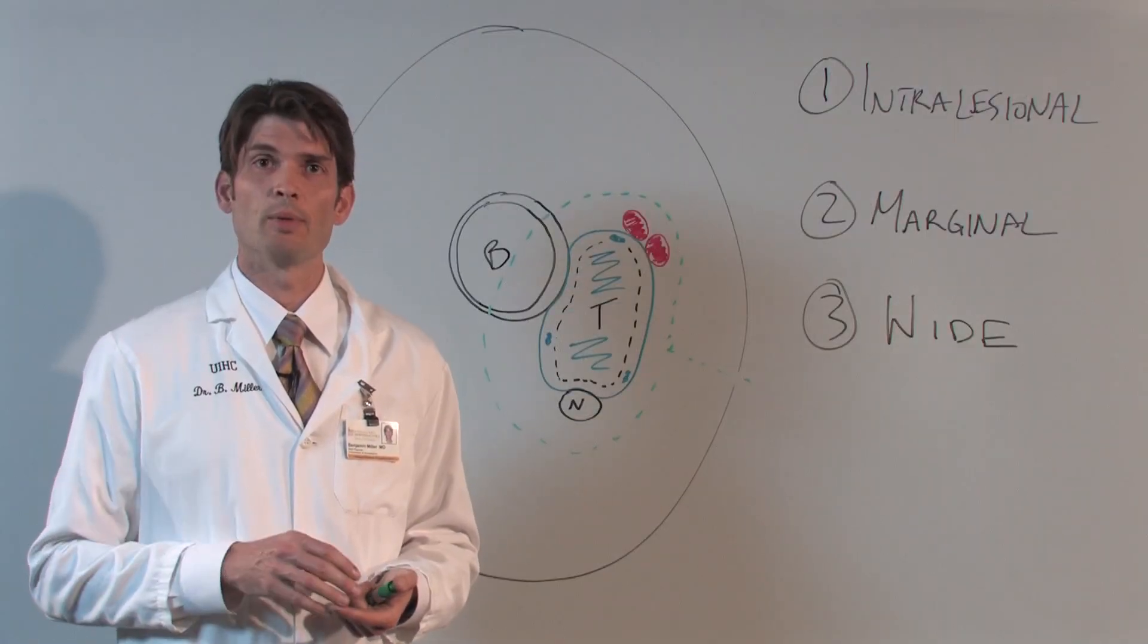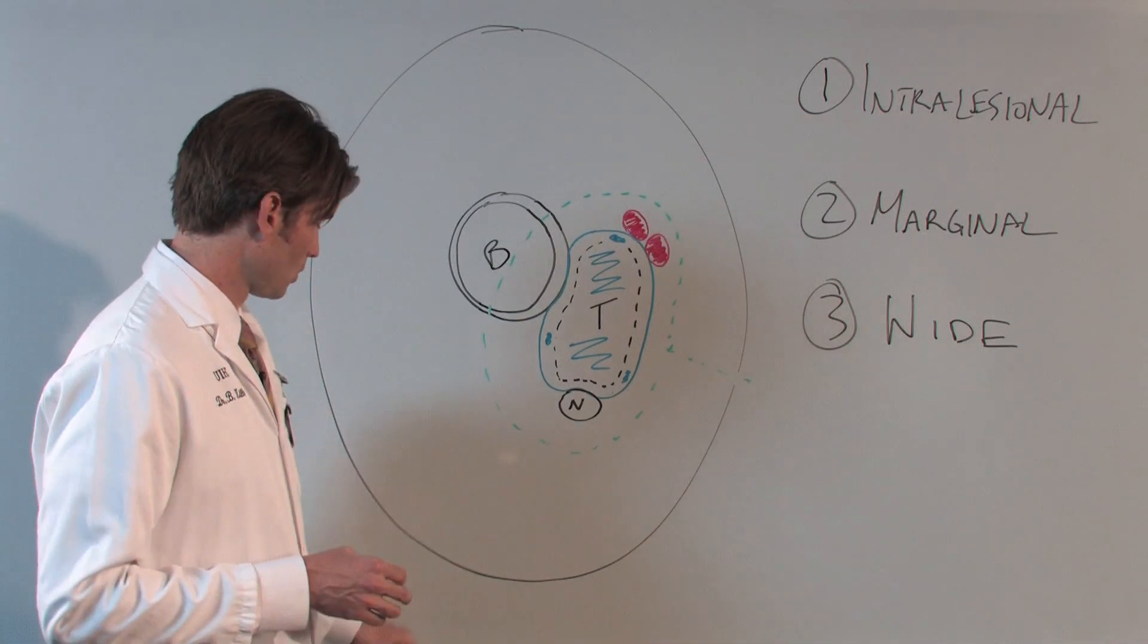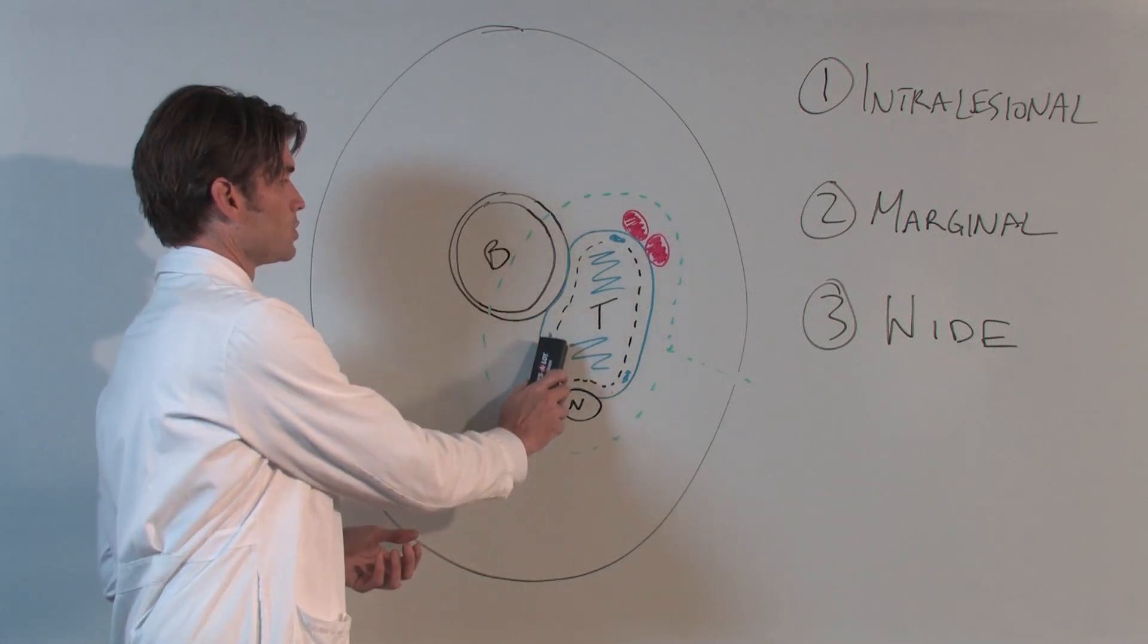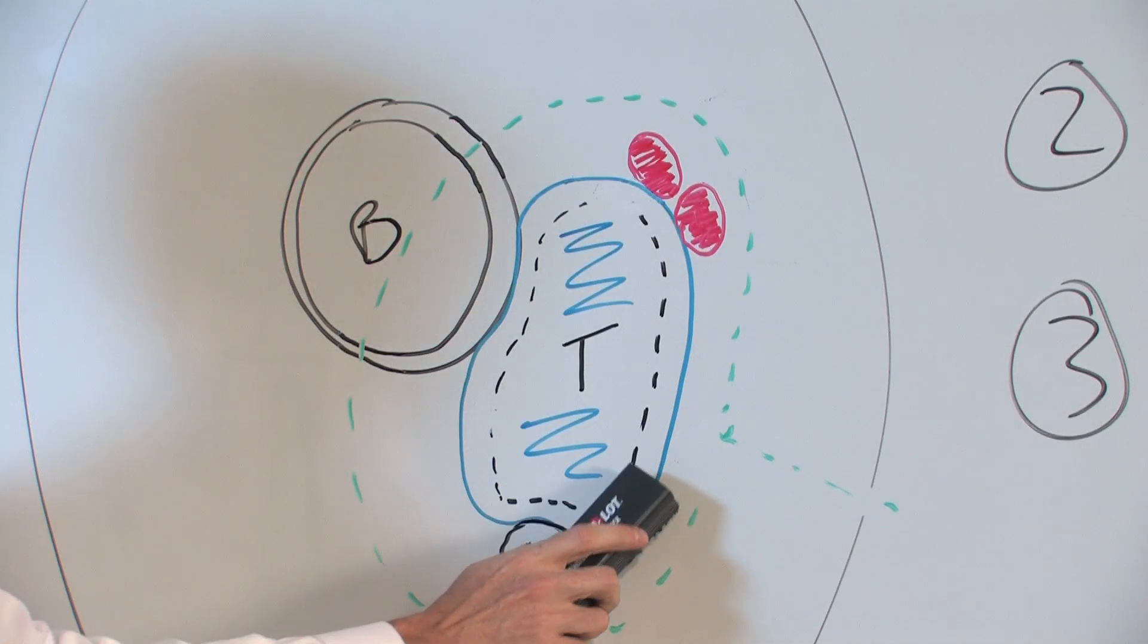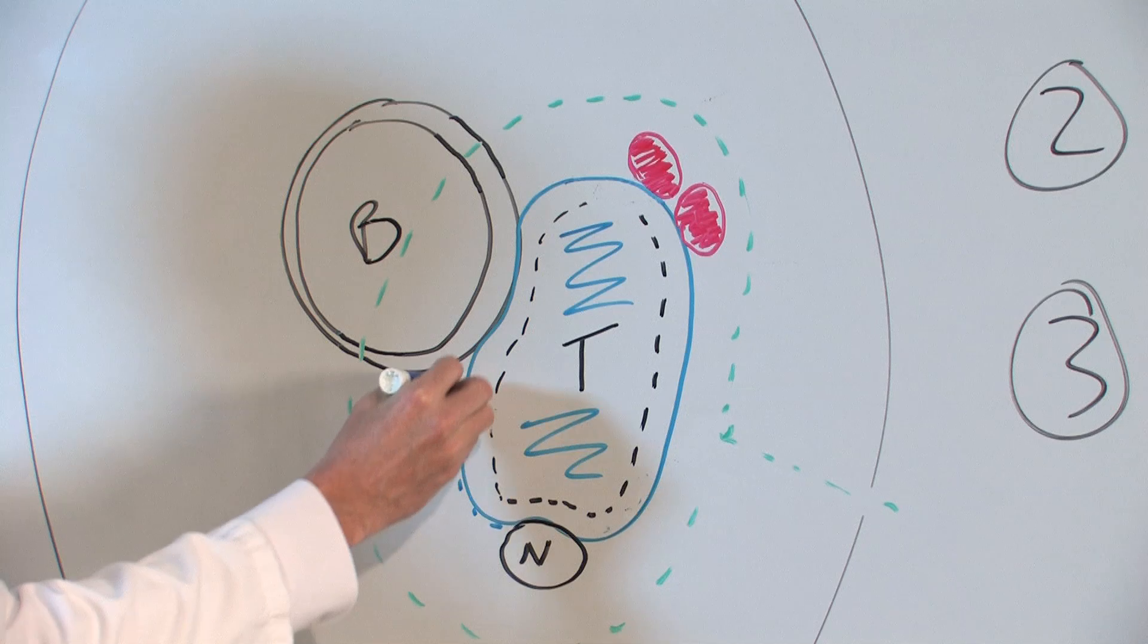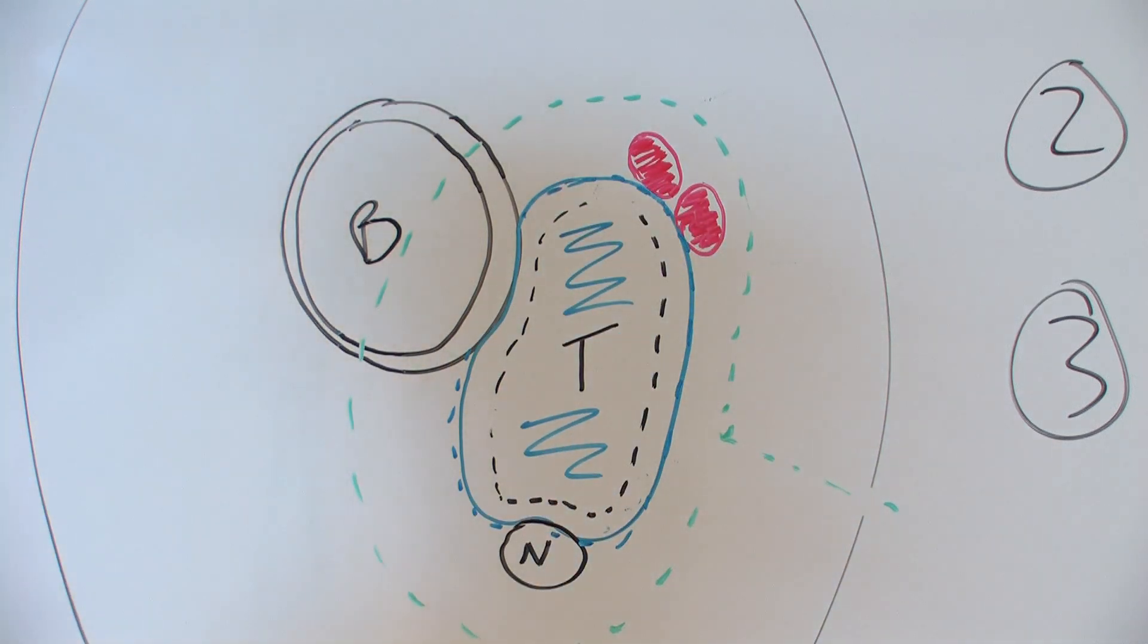The way we get around this is to commonly employ radiation treatments, either before or after surgery. What the radiation treatments will do is basically sterilize this reactive zone. So any living tumor that's at the edge of the tumor mass itself will be killed with the radiation, allowing us to do a surgery immediately adjacent to the tumor, the bone, the blood vessels, and the nerve, taking it out in its entirety, preserving the function of the limb, and having a very minimal chance of the tumor growing back in the spot.